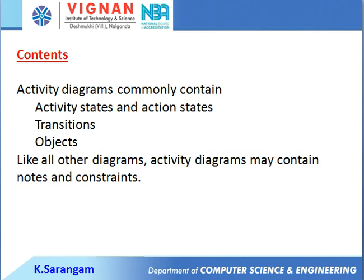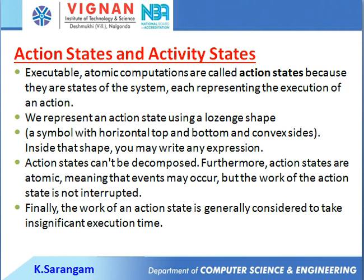Activity diagrams commonly contain activity states, action states, transitions, and object links. Like all other diagrams, activity diagrams may also contain notes and constraints. Action states represent executable atomic computations — they are states of the system, each representing the execution of an action.